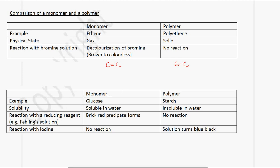Another example is glucose and starch. Glucose is the monomer and starch is the polymer. Glucose is soluble in water, but starch is insoluble. Glucose reacts with a reducing agent like Fehling's solution to produce a brick-red precipitate — this reaction does not occur with starch. With iodine, glucose has no reaction, but starch will turn the solution blue-black.